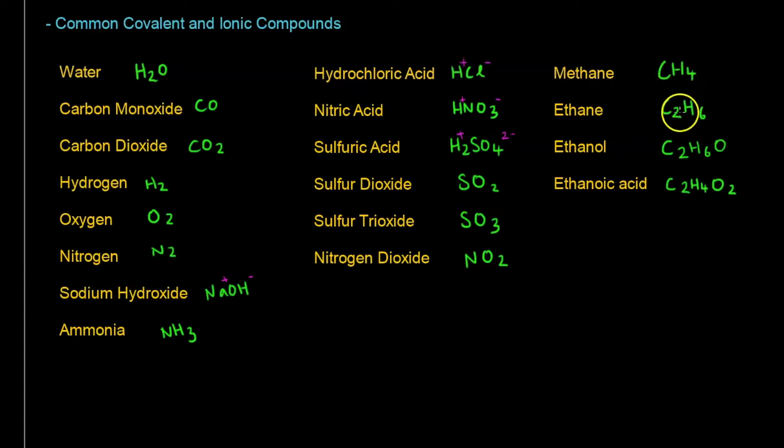So that's why there's CH4, C2H6, C2H6O. Ethanoic acid is special, it's actually an ionic compound, but we shorten it, we simplify it to C2H4O2.